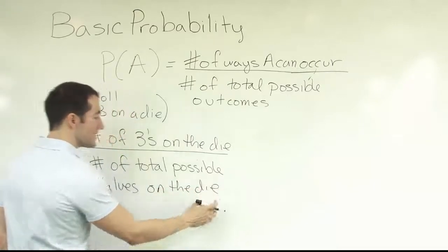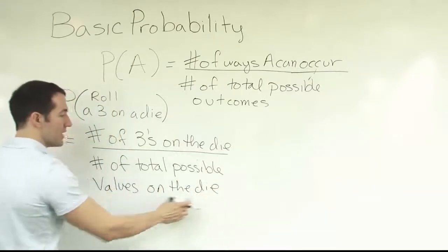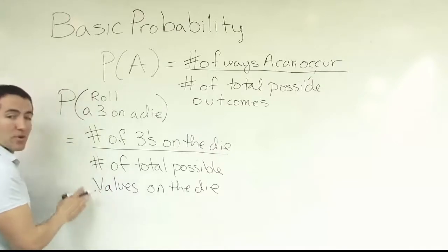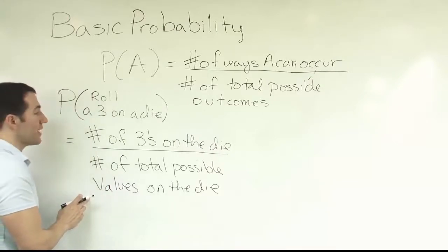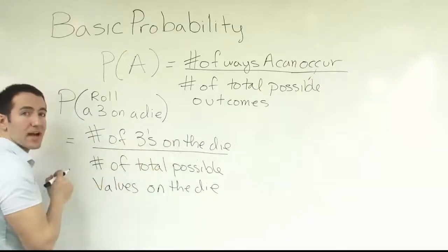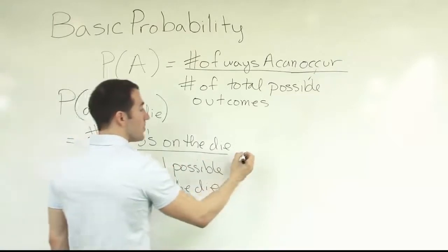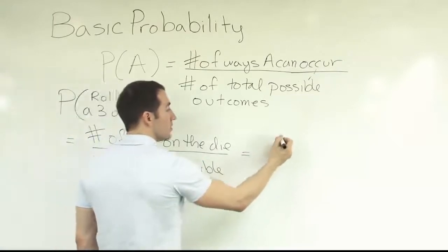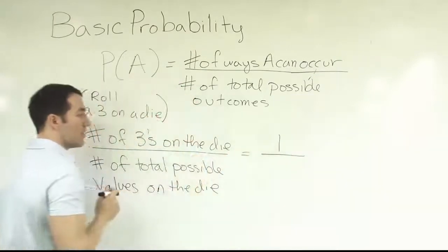The die is six-sided, so we should be able to figure that out pretty easily. There'll be six total possible values available on the die, and the number of threes on the die should just be one.